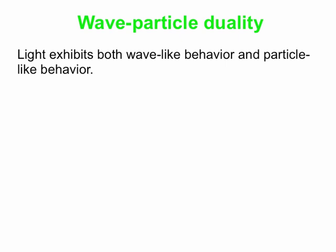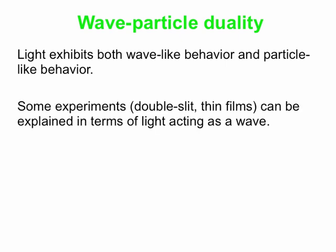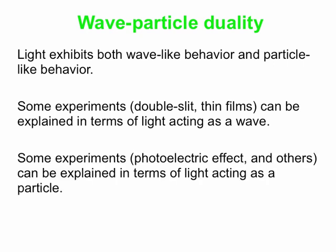We know that light exhibits both wave-like behavior and particle-like behavior. We have a certain class of experiments, such as double slit interference or thin film interference, and these can be explained in terms of light acting as a wave. And then we have a whole bunch of other experiments, including the photoelectric effect but not limited to that, that can be explained in terms of light acting as a particle — really a packet of energy that we call a photon. So light exhibits both wave behavior and particle behavior.